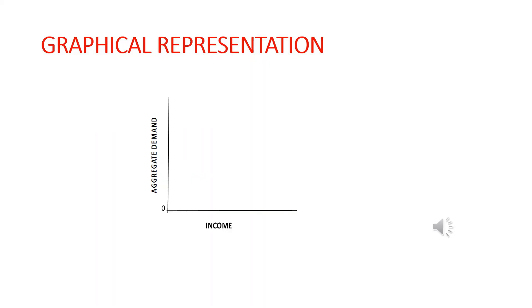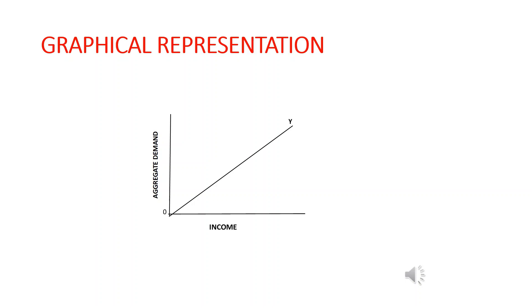Now let's look at the graphical representation of the investment multiplier. I'll be building the graph step by step, so I request all of you to draw the graph along with me for better understanding. First, we draw two axes: on the x-axis we take income, and on the y-axis we take aggregate demand. Then we draw an income curve moving upward to the right.